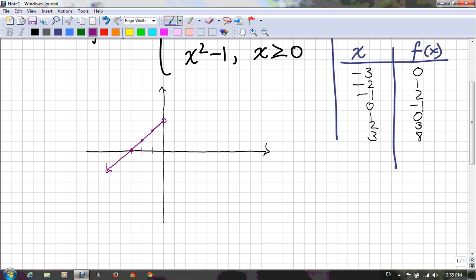But it does not include the point 0, 3, because of course 0 is not part of the domain of that piece of the function. That's where other parts take over. And so you have 0, negative 1 as a definite point, and then 1, 0. That's another point, and then 2, 3.